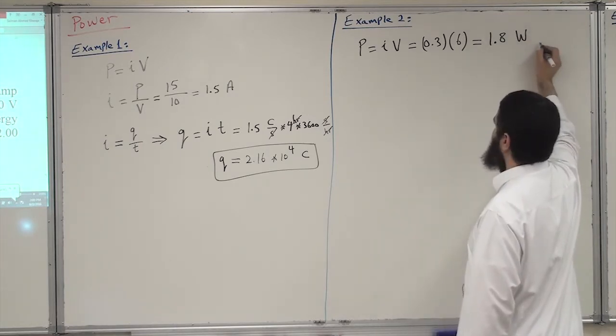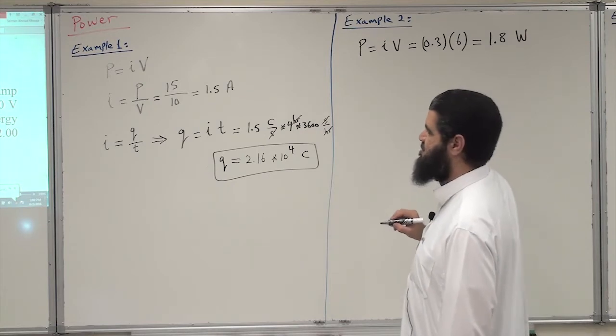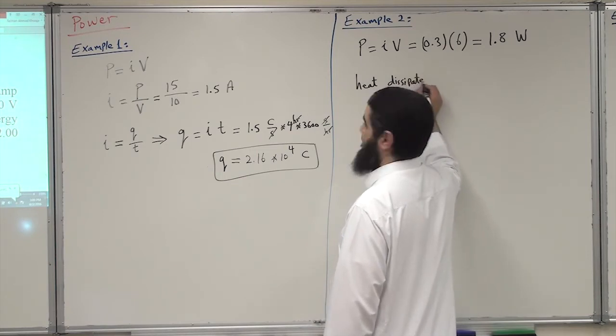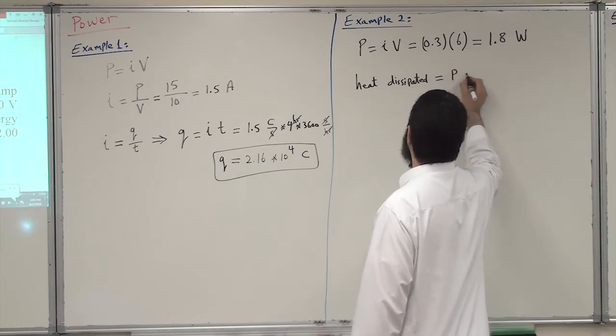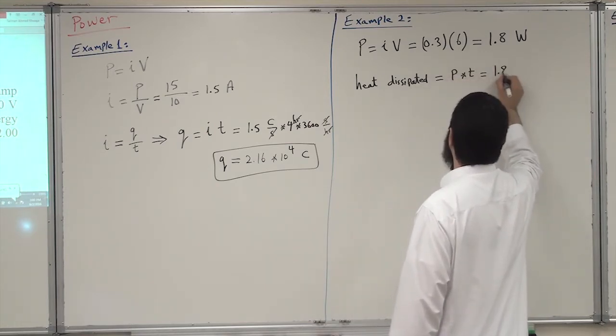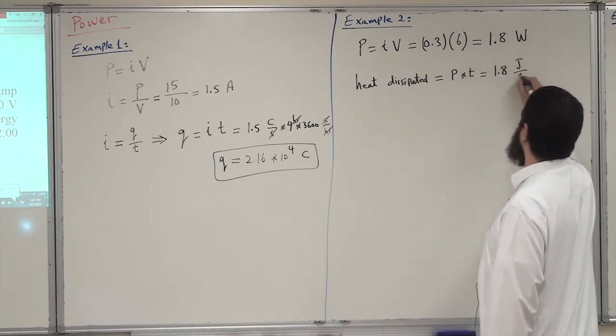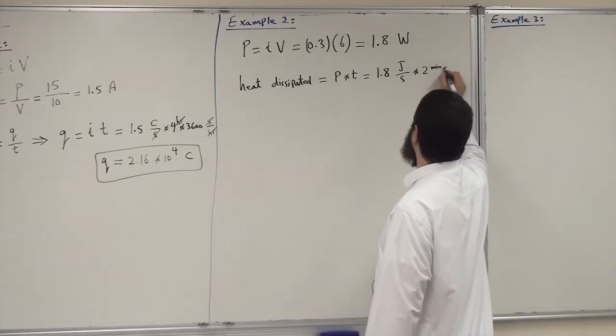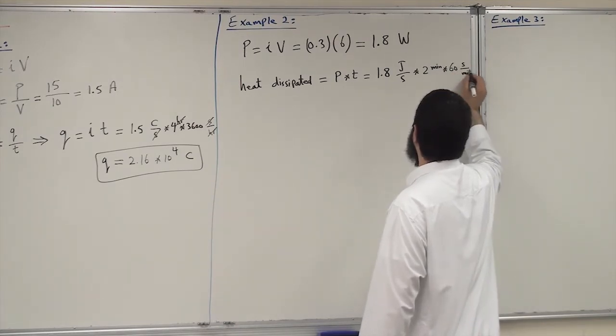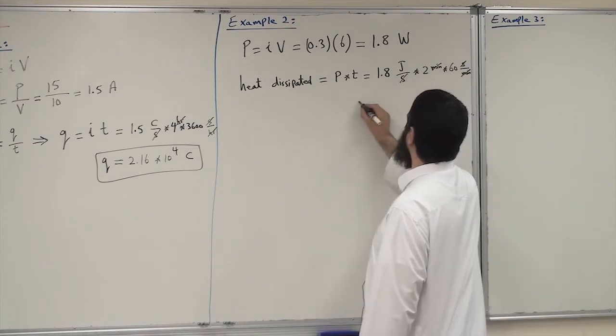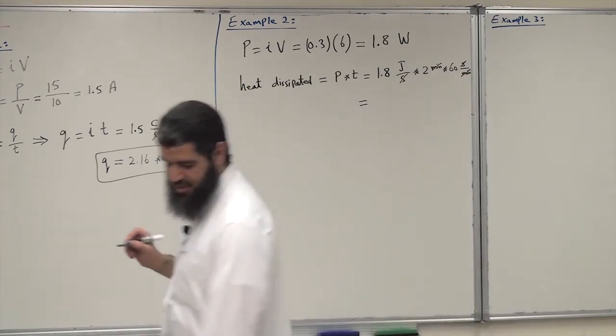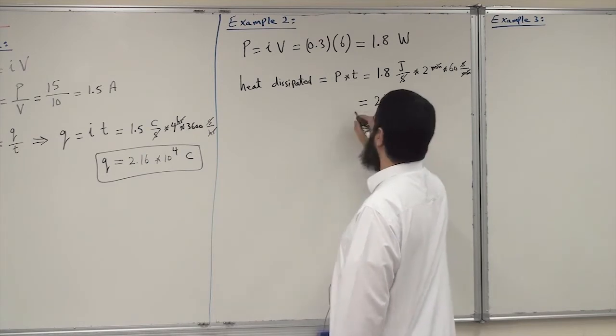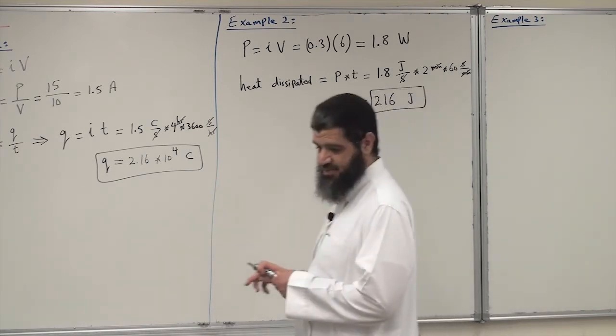We know that watt is joules per second. Energy equals power multiplied by time. So we have 1.8 watts multiplied by the time, which is two minutes, so two minutes multiplied by 60 seconds per minute. Minute will cancel with minute, second will cancel with second, and we are left with energy in units of joules. This is 216 joules. This is the answer for example number two.